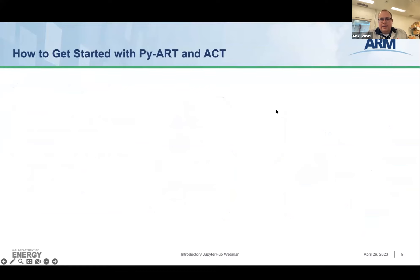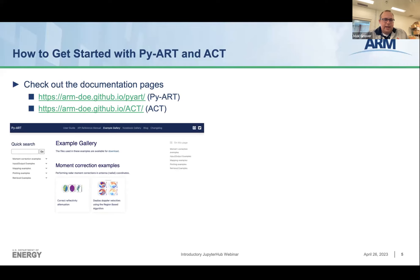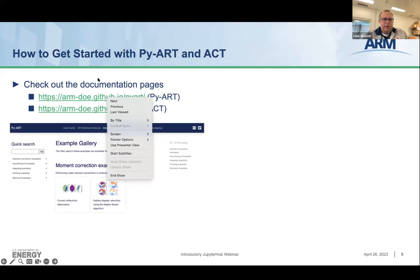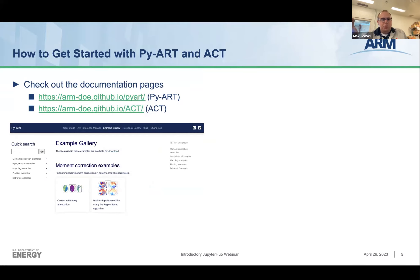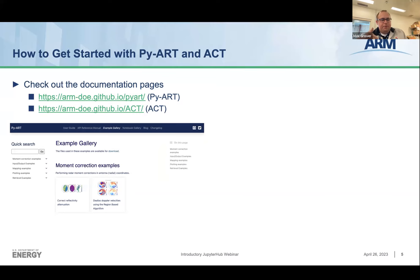How do you get started? Fortunately, both of these packages are already installed on the Workbench JupyterHub in the base environment, which is really nice. If you're looking for learning resources, I'd encourage you to check out the documentation pages — I'll copy and paste these links into the chat. The place I usually like to start is the example gallery, where you get an idea of what you want to do. For example, the PIART gallery shows things like correcting for reflectivity attenuation and dealiasing Doppler velocities, which are part of the data cleaning process. You'd want to go to one of these examples and figure out how to apply it to your data and follow that workflow.